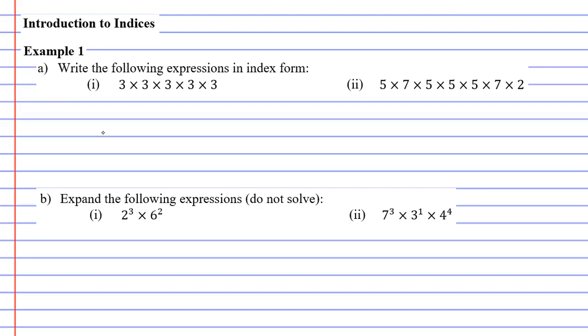Looking at part I, we've got 3 times 3 times 3 times 3 times 3. I notice there are 5 threes, so I'm going to write my base number down, which is 3, and because I have 5 of them, I'm going to put it to the power of 5.